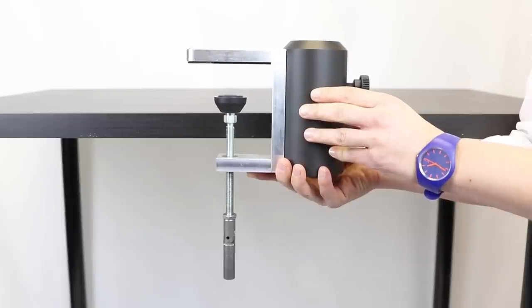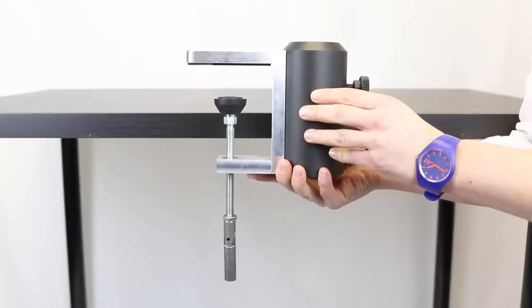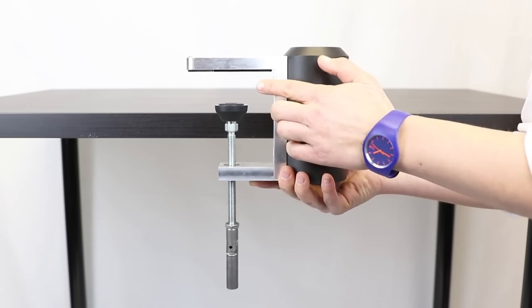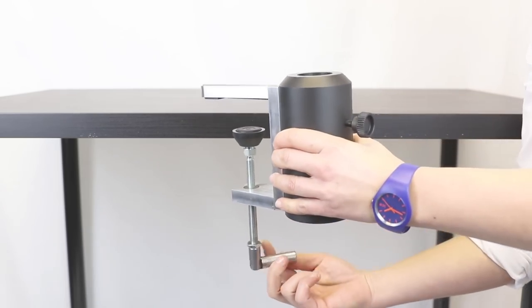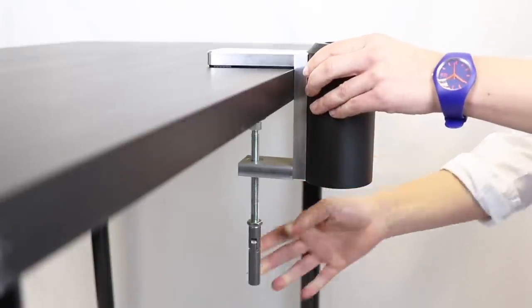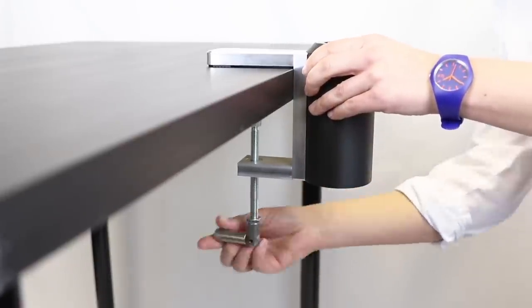You want to have a sturdy table with no lip underneath. Undo and widen the gap. Slot it onto the table and make sure you tighten the handle underneath.